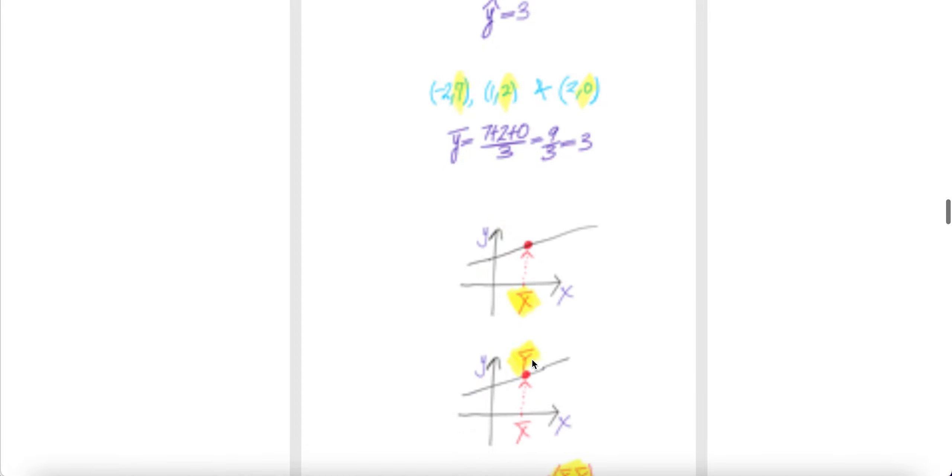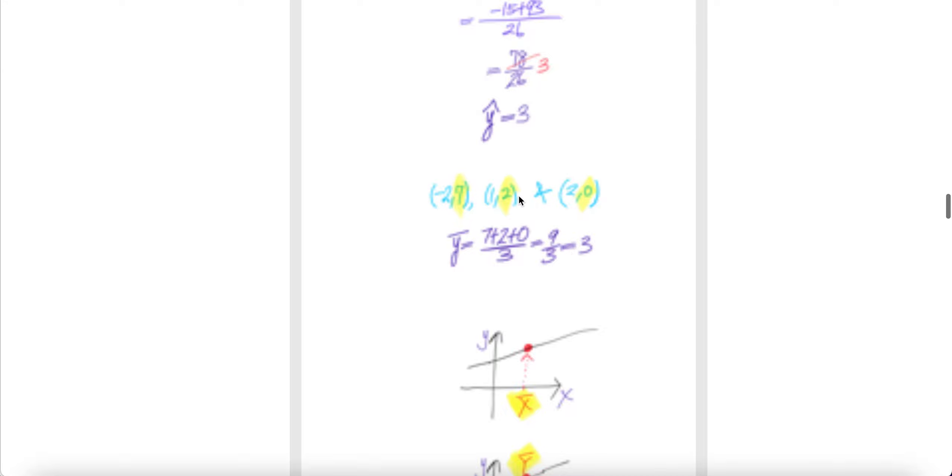See that bar y here. Bar y is three. Y hat is also three. So given bar x, the point here is y hat from the regression line. Given bar x, you can compute the y hat.